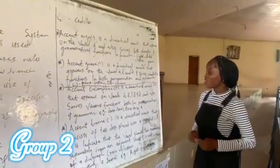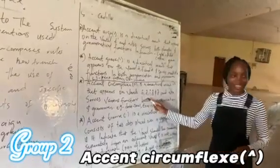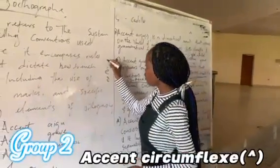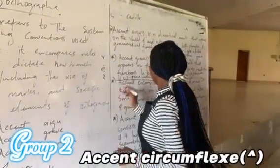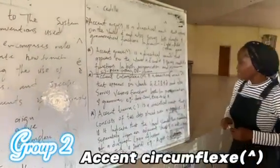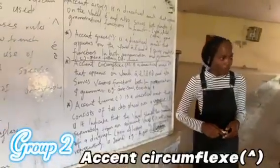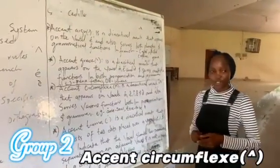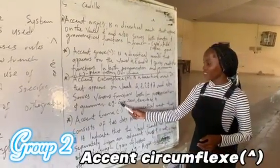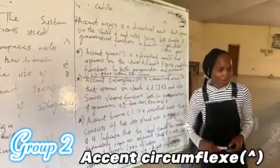Next, we have the accent circonflexe. The accent circonflexe is also a diacritical mark that appears on the vowels A, E, I, O, and U — it appears on all five vowels. It is an upside-down V shape. It helps in various functions in both the pronunciation and grammar of certain words in the French language. For example, we have âme, which means 'soul,' and we also have être, which means 'to be' in English.